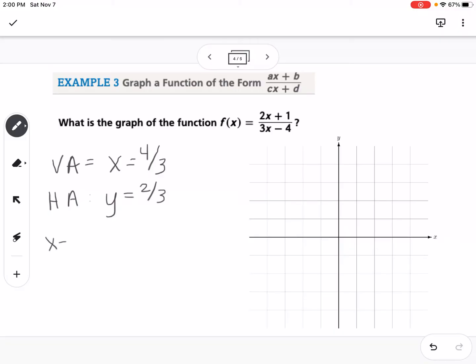The x intercept we find by what makes the numerator equal 0. If I set 2x plus 1 equal to 0 and solve for x, I get negative 1 half. For my y intercept, I plug in 0 for x. If I plug in 0 for all the x's, I would get negative 1 fourth. All of those are going to help me graph.